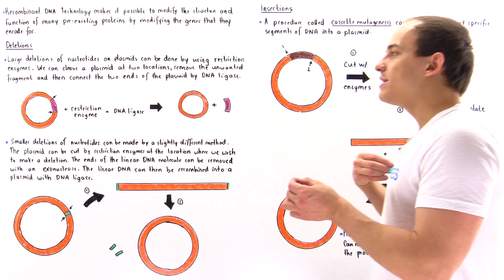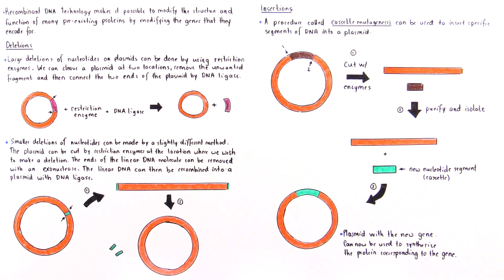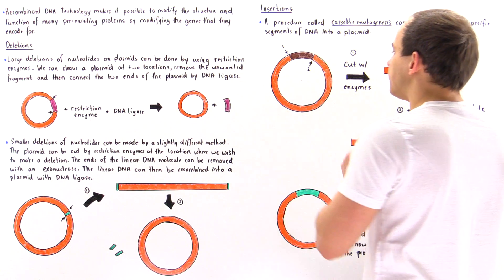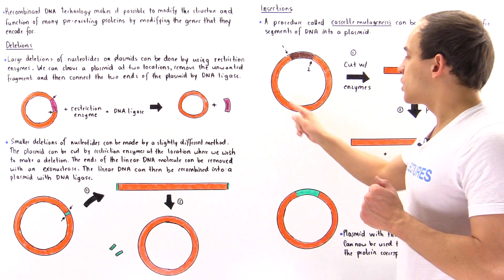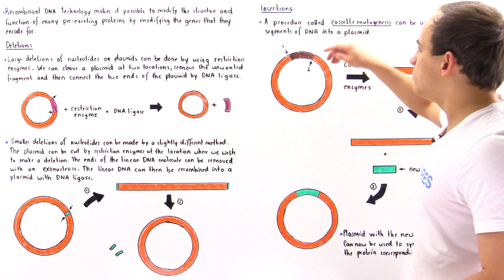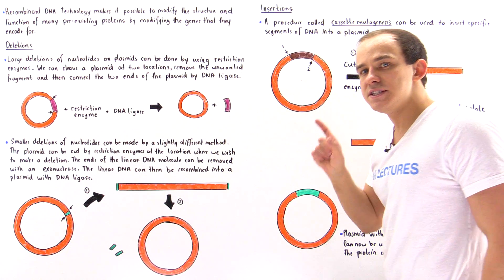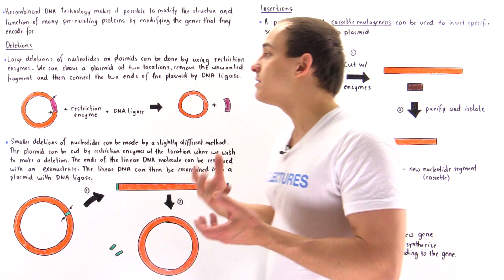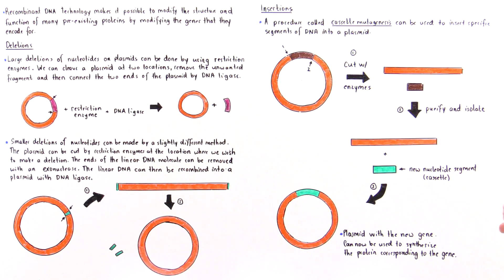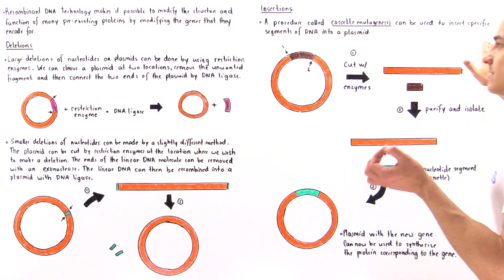Now, what if we want to insert a segment of DNA into our plasmid? The method we're going to use is known as cassette mutagenesis. This procedure can be used to insert specific segments of DNA — known as cassettes — into the plasmid. Let's suppose we have a plasmid with an orange section we want to keep, and a brown section we want to remove, and we want to insert a specific segment of DNA synthesized in the laboratory.